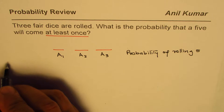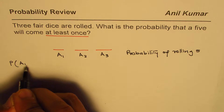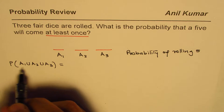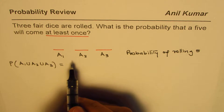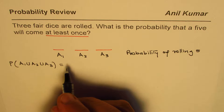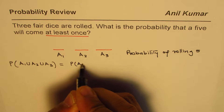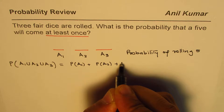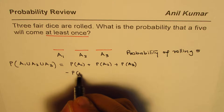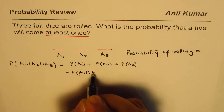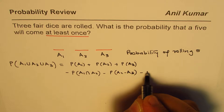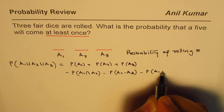The question is: what is the probability that a five will come at least once? If we find the union of all three — probability of A1 union A2 union A3 — when we find the union we are counting the intersections twice. So the probability should be P(A1) + P(A2) + P(A3) minus P(A1 ∩ A2) minus P(A2 ∩ A3) minus P(A1 ∩ A3).